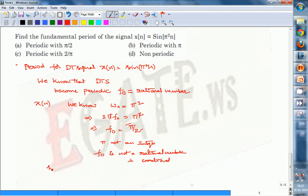So, the given x[n] is non-periodic. The answer is D, non-periodic.